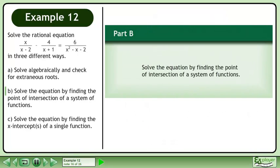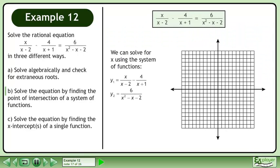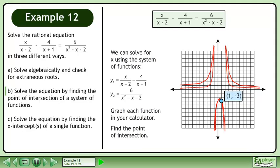In part B, solve the equation by finding the point of intersection of a system of functions. We can solve for x using the system of functions y1 equals x over x minus 2 minus 4 over x plus 1, and y2 equals 6 over x squared minus x minus 2. Graph each function in your calculator. Find the point of intersection.